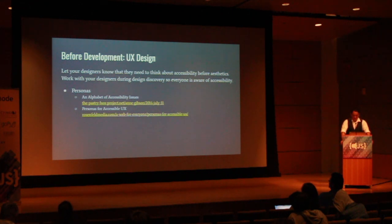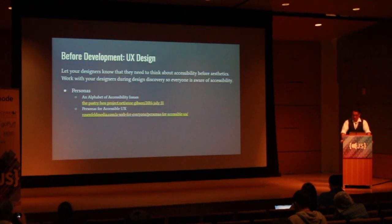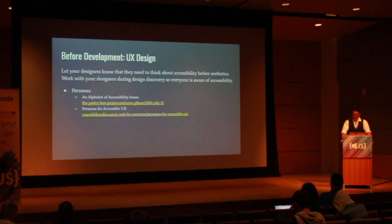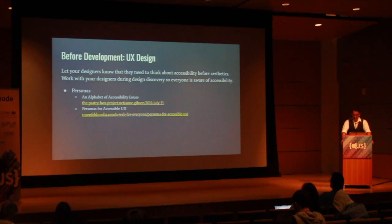Outside of development, you want to get designers involved. Find out if your designers are considering accessibility — if they aren't, they should be. Before work gets to the developers, the designers should have put the designs through usability testing and accessibility testing. Personas should be created that include various accessibility scenarios. Ideally, designers should be thinking about the accessibility impact of their designs on users. User research, wireframes, and personas should all include accessibility as a concern, and developers need to be aware of these materials.